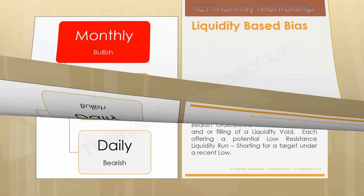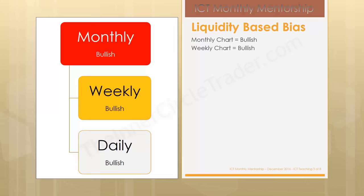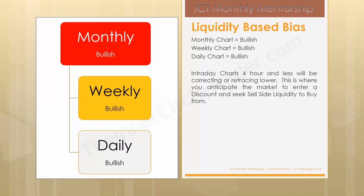Liquidity based bias for a bullish monthly chart, bullish weekly chart, and a bullish daily chart: intraday charts four hours or less will be correcting and retracing lower. This is where you anticipate the market to enter into a discount and seek sell-side liquidity to buy from. What we just showed you was the bullish order block you would use in this instance. And we're actually going to go into the dollar index and show you all this conceptually.